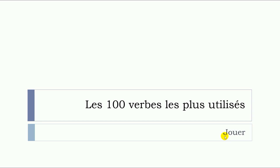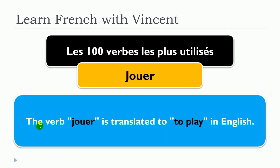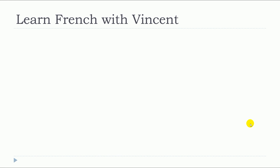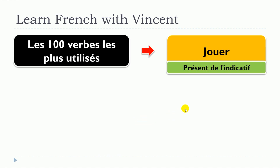In this lesson, we will see together the verb jouer. The verb jouer is translated to 'to play' in English. We'll see a few examples of jouer in the présent de l'indicatif.